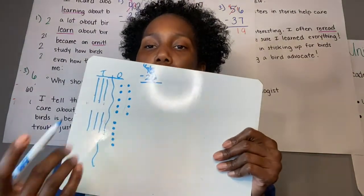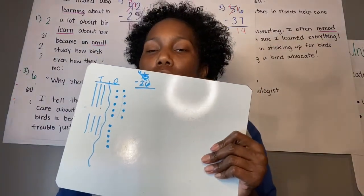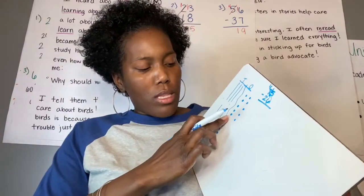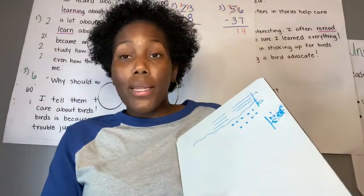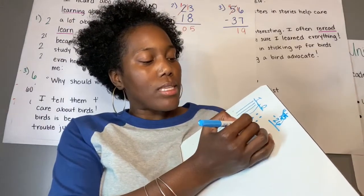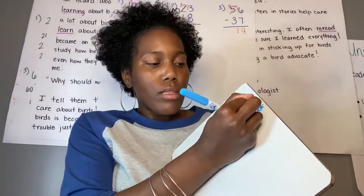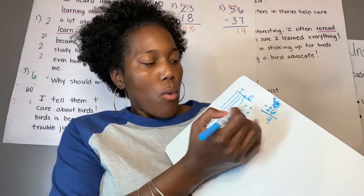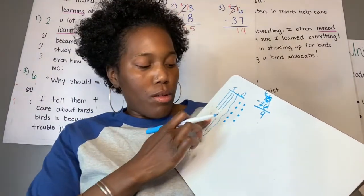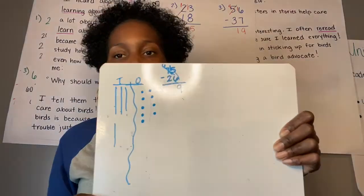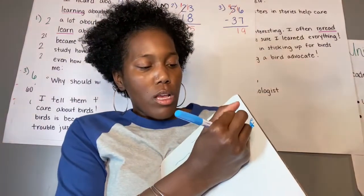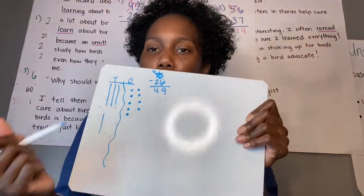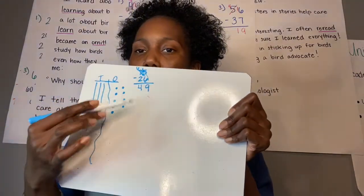And now we can subtract. I have 15 minus 6. I take away 6 dots — after erasing, I count what's left: 9. I put that 9 in my ones column. Then I subtract from my tens: I have 6 and need to take away 2, leaving 4. So 75 minus 26 equals 49 — 4 tens and 9 ones.